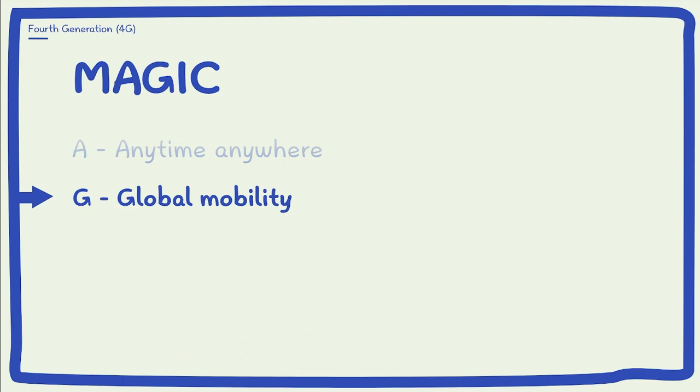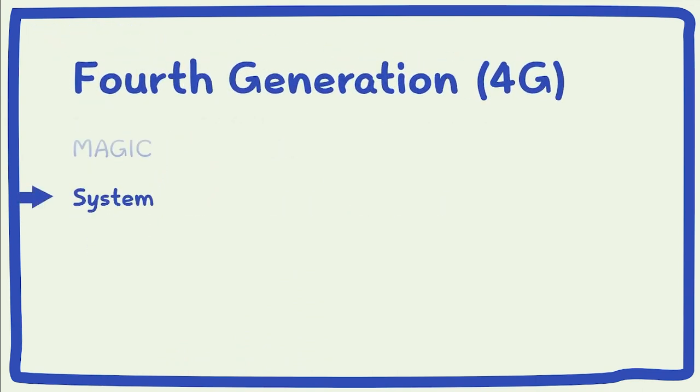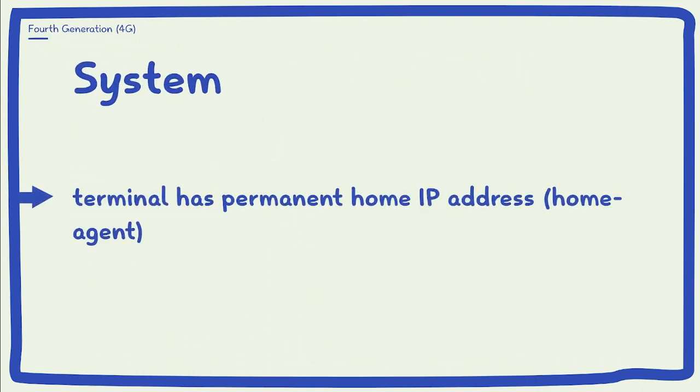MAGIC also includes global mobility support, integrated wireless solution, and customized personal services. In 4G mobile systems, each terminal has a permanent home IP address assigned to it, which is known as the home agent.